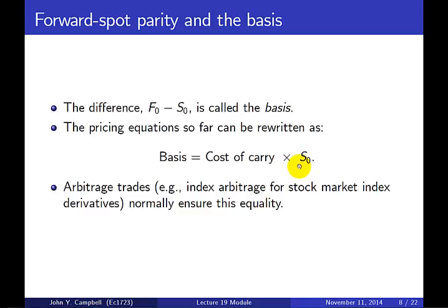How is this relationship enforced? The answer is arbitrage trades — for example, index arbitrage when these derivatives are on stock market indexes. These arbitrage trades would normally ensure this equality, and we'll talk more about that in class.